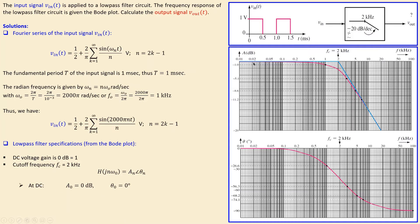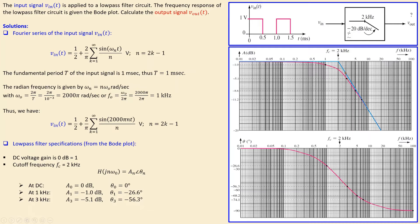At DC, from the Bode plot, the magnitude is 0 dB and the associated phase is 0 degrees, corresponding to n equals 0. At n equals 1 — one kilohertz, the fundamental frequency — the magnitude is minus 1 dB and the associated phase theta 1 is minus 26.6 degrees. Moving to the third harmonic at three kilohertz, we have minus 5.1 dB and an associated phase of minus 56.3 degrees.